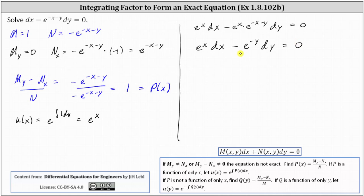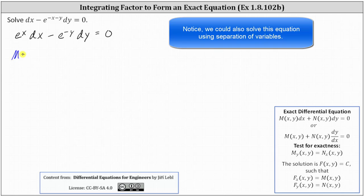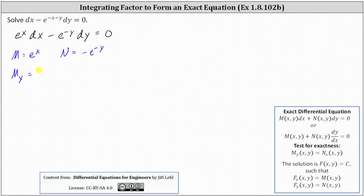This should now be an exact differential equation. In this new equation, M is equal to e to the x and N is equal to negative e to the negative y. The partial of M with respect to y is equal to zero because M is a function of x, and the partial of N with respect to x is also zero because N is a function of y. Because the first-order partials are equal, we now have an exact differential equation, and any solution to this equation is also a solution to the original. The solution is F of x, y equals c such that the partial of F with respect to x equals M and the partial of F with respect to y equals N.